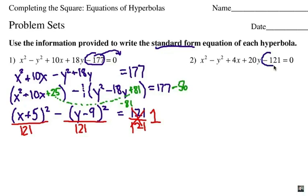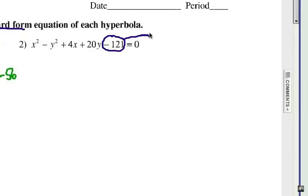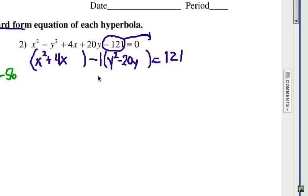Again, we're going to move the constant over to the other side. So we add 121 to each side. Now let's group our x's and y's together. Keeping in mind that we have to factor out a negative 1 for the y groups because we have to have a subtraction in between. We're going to complete the square, which will be half of 4 is 2 and square it. Half of negative 20 is negative 10 and square it, positive 100.